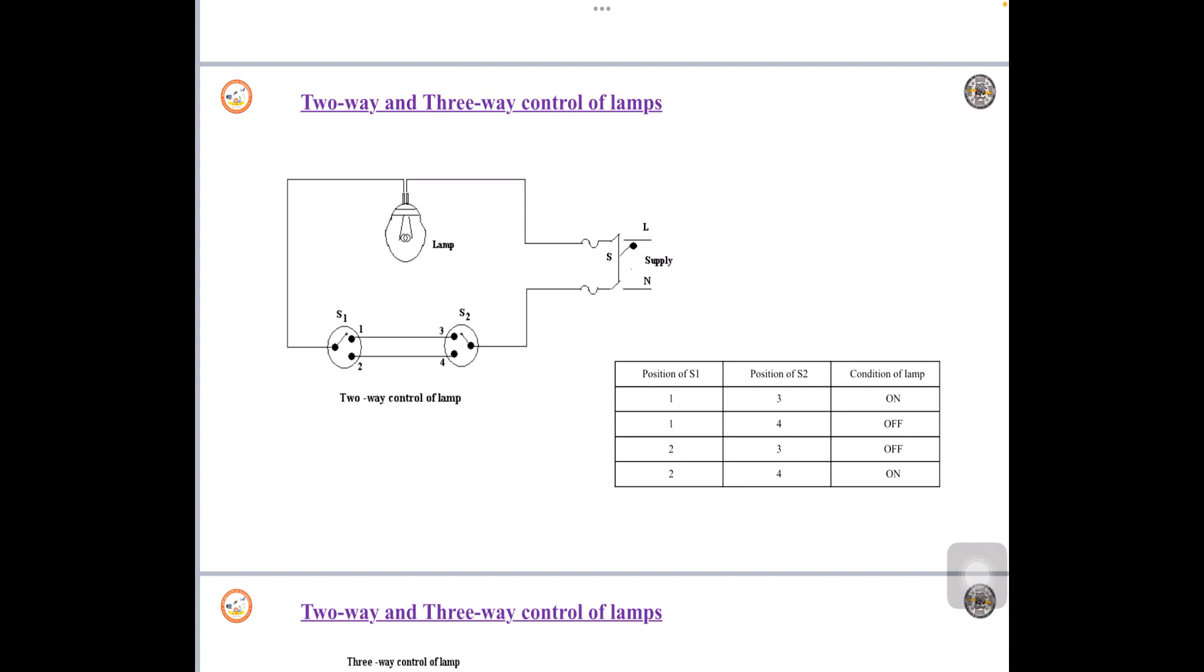Now we can analyze. There are 4 possible conditions of the lamp under 2-way control of lamp. If you observe the table here, we have mentioned position of S1, position of S2, and condition of lamp.